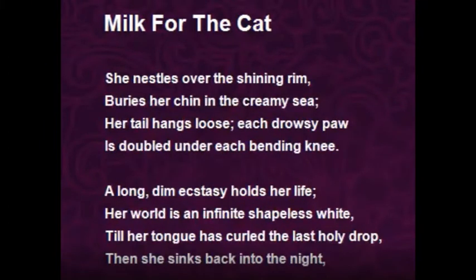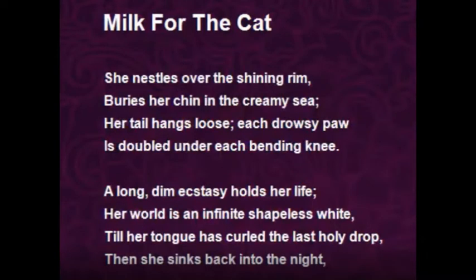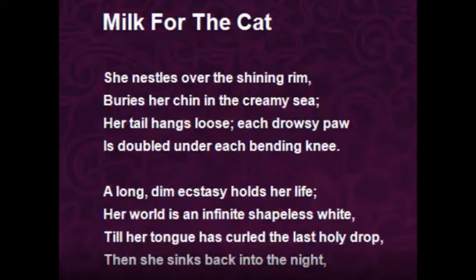She nestles over the shining rim and buries her chin in a creamy sea. Her tail hangs loose; each drowsy paw is doubled under each bending knee. The poet explains that she adjusts her face above the shining rim of the saucer, gets comfortable, and buries her chin into the milk that looks like a creamy sea. With her paws nestled under her knees, the cat enjoys the milk while her tail hangs loose.